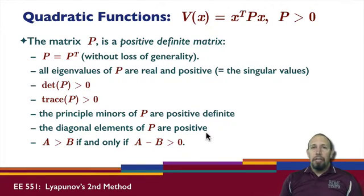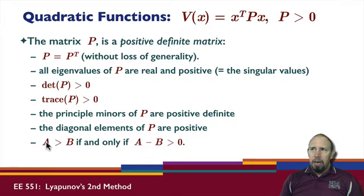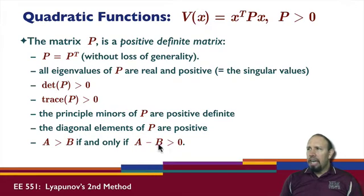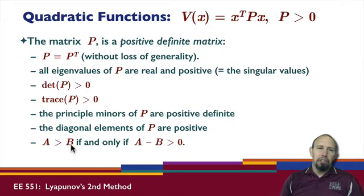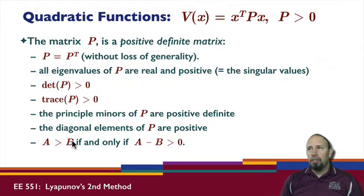When we have positive definite matrices, we can talk about relations between them by looking at expressions of this type. This form makes sense if and only if the matrix A minus B is a positive definite matrix. Otherwise, element by element, we may not have every element in one matrix greater than every element in the other, as a matrix could have negative values while the other only has positive values.